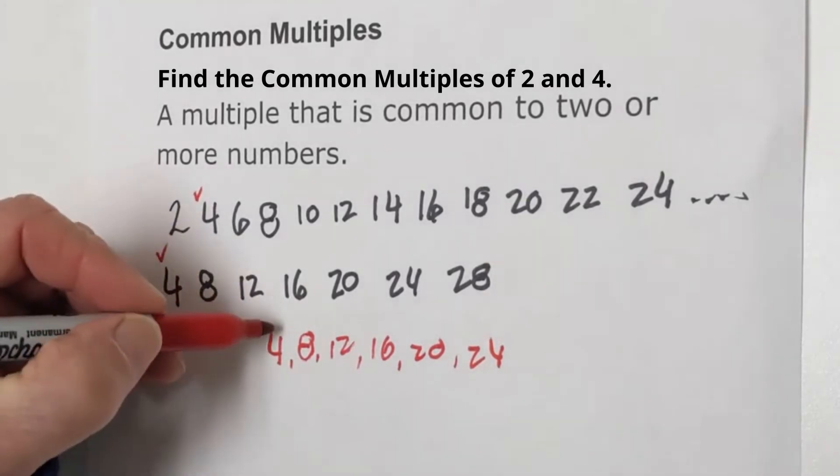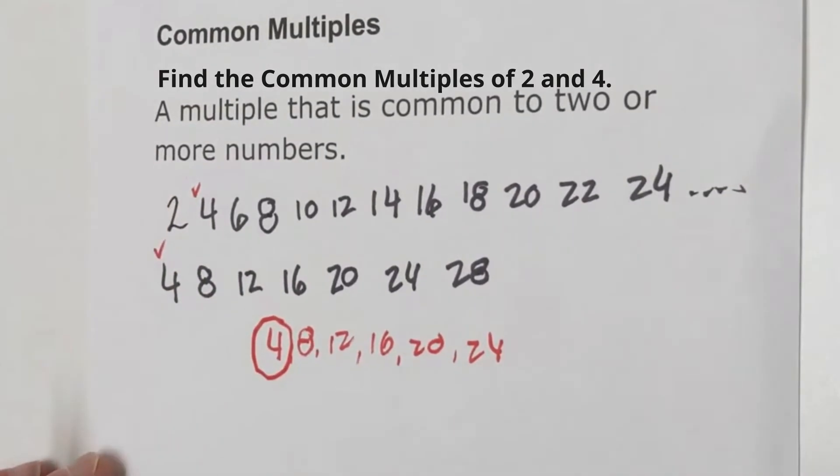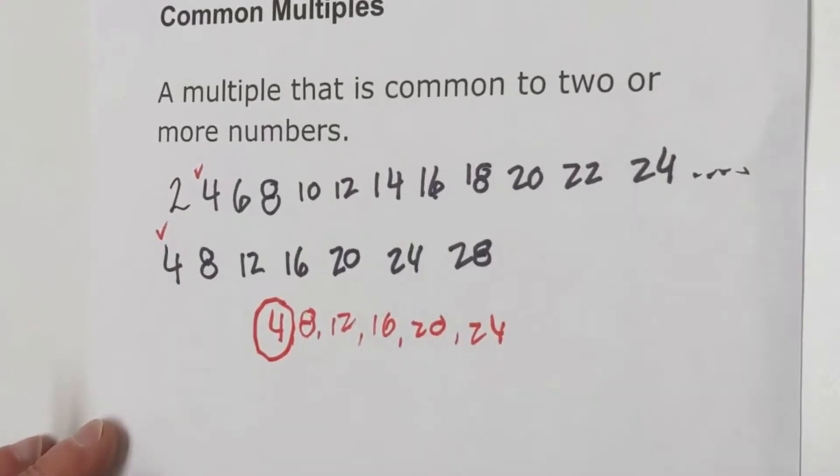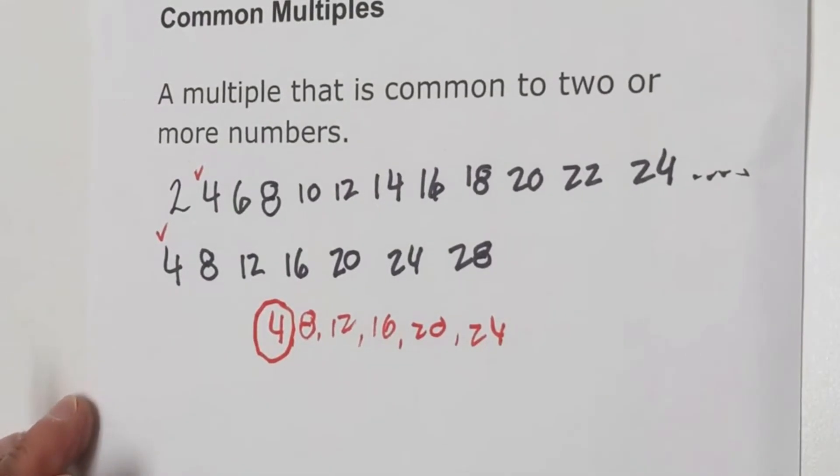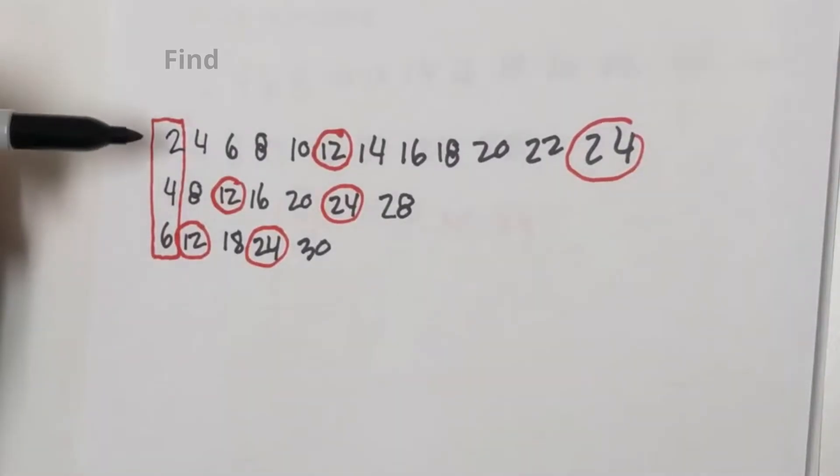And then if you had to find the least common, it would be four because it's the smallest. Now you can also do this with more than one number. Let's look at another example.